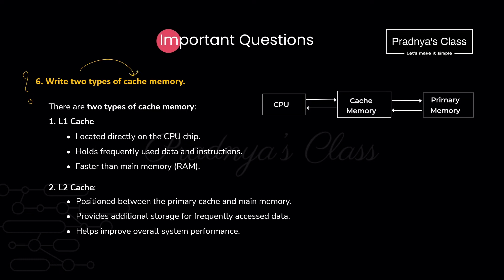The next question: write two types of cache memory. Cache memory is placed between the CPU and primary memory to compensate for the speed difference between both of them. There are two types: Level 1 cache (L1) and Level 2 cache (L2). L1 cache memory is placed inside the CPU chip, whereas L2 cache memory is placed between the L1 cache and primary memory.